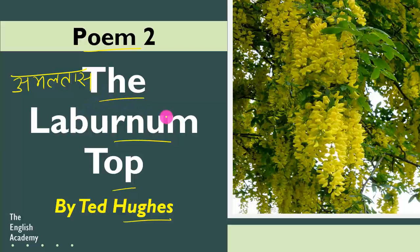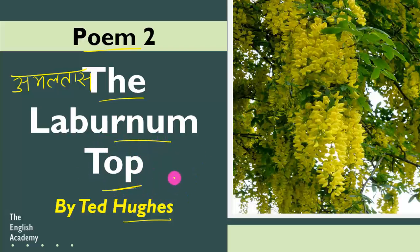If you look outside, you will see Amaltas ka paed. There are very bright yellow flowers on the top. And the Laburnum Top means the Laburnum tree which is on the top — so there are branches, flowers and leaves. Let's discuss this poem.